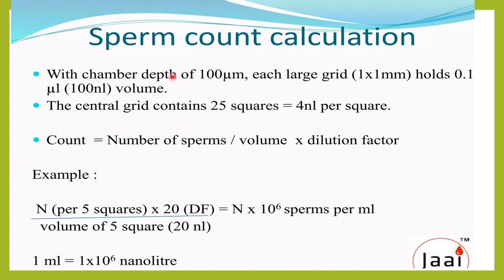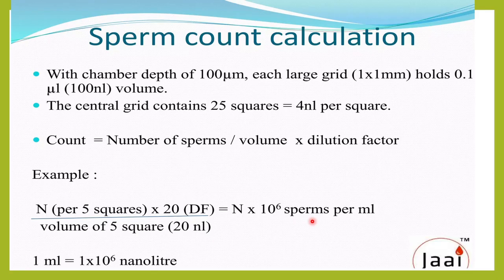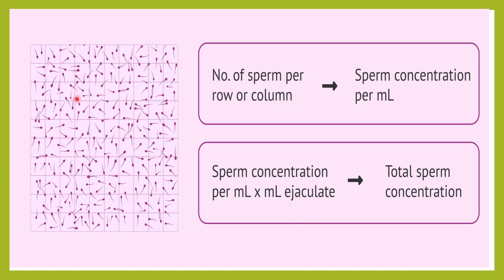In the formula, the number of cells counted is per 5 squares — the 4 corner squares and 1 center square. With a dilution factor of 1 in 20 and a volume of the 5 squares being 20 nanoliters, this gives N × 10⁶ sperms per ml. When you get the sperm concentration and multiply it by the ejaculate quantity in ml, that gives you the total sperm count.